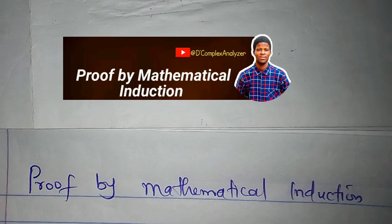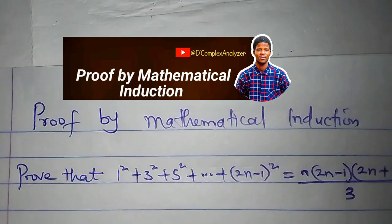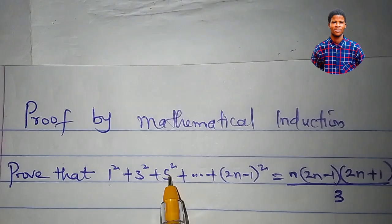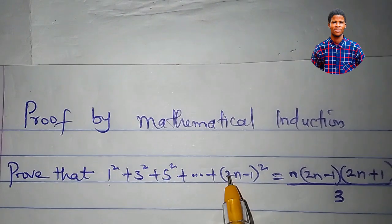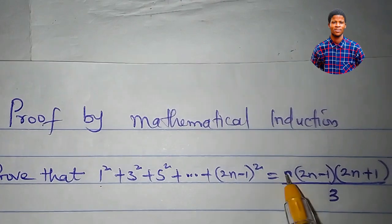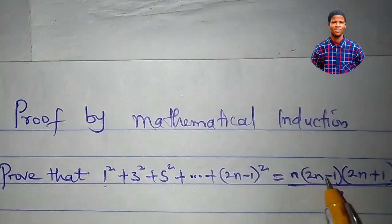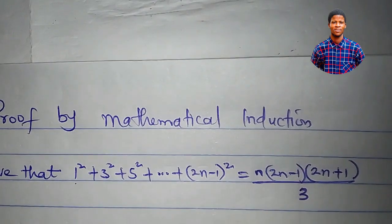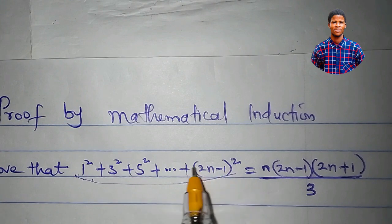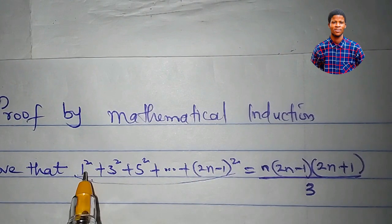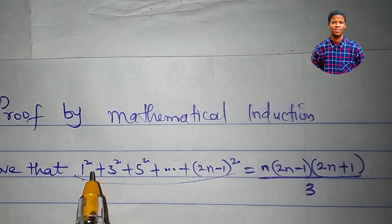Let's learn how to prove by mathematical induction. I want to prove that 1 squared plus 3 squared plus 5 squared up to the (2n minus 1) squared is equal to n times (2n minus 1) times (2n plus 1) all divided by 3. What you can see here at the left hand side is the sum of the squares of the first n positive odd numbers.